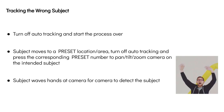The camera may pick up the wrong subject if there are multiple people in frame and multiple people are moving. To mitigate this issue: one, you can turn off the auto tracking and start the process over; two, the intended subject moves to a preset location, turns off auto tracking, and presses the corresponding preset number to aim the camera to that location; and three, the intended subject can wave hands at the camera for the camera to detect the correct subject — sort of like when we're trying to turn on lights that are on a sensor.